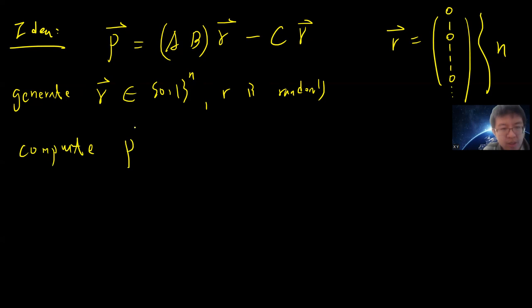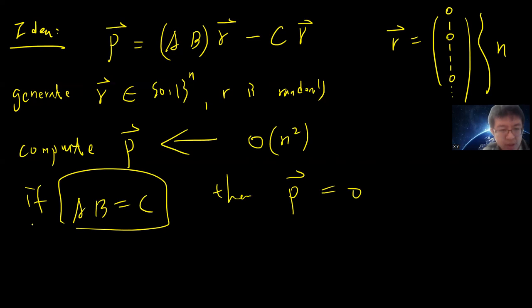Notice that this is just vector multiplication, so we only require O(n squared). And obviously, if AB is equal to C, then P must be zero.